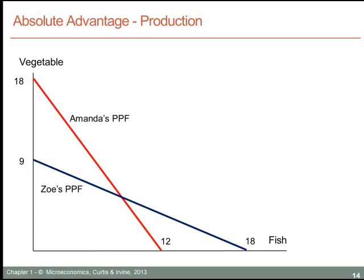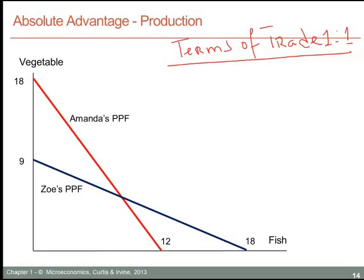In the example we just developed, we assumed that individuals were willing to trade at a rate of one-to-one. That is to say, Amanda and Zoe were each willing to exchange one unit of vegetable for one unit of fish. The terminology we use to describe this trade is to say that the terms of trade were 1-to-1. They were willing to exchange one unit of vegetable for one unit of fish, and when that happened, they were both able to gain as a result of specialization.